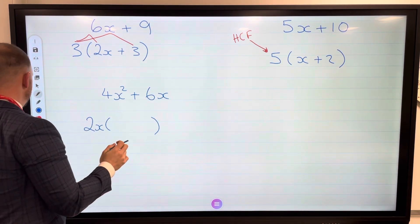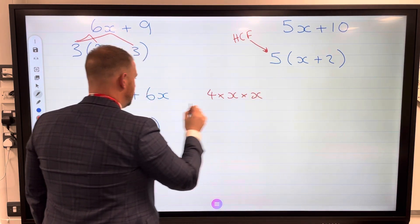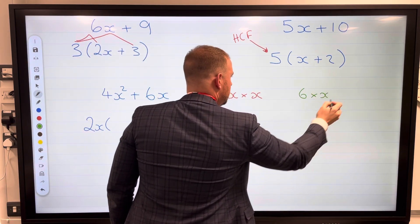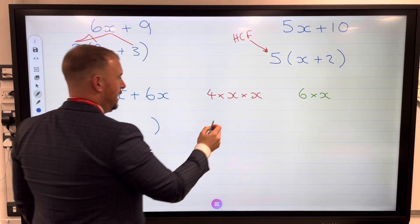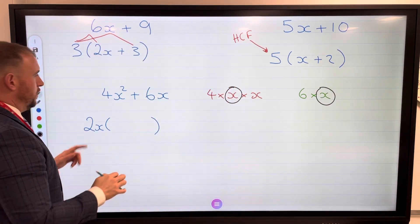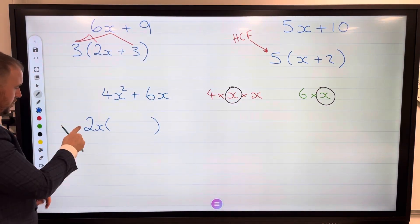Just to show you: this 4x² is 4 times x times x. This 6x here is 6 times x. You can clearly see I have got an x in both, not an x², and obviously a 2 goes into both 4 and 6 as well. So I have 2x here on the outside, that's my highest common factor.